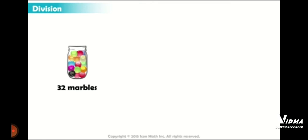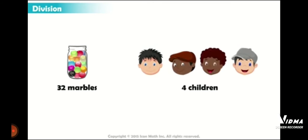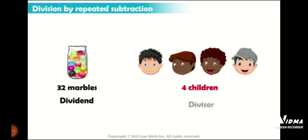We already know that we are having 32 marbles, and these 32 marbles are to be divided equally among four children. Now what we have to do? We have to start distributing them equally one by one. Here 32 marbles is the dividend and four children are the divisor.